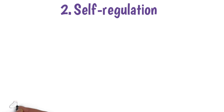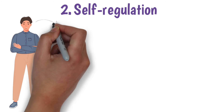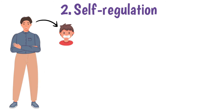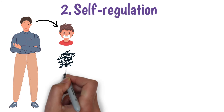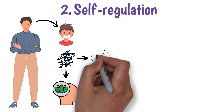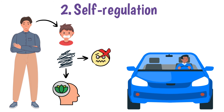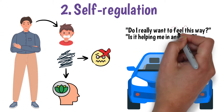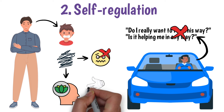Self-regulation: once we are aware of our thoughts and emotions, the next step is to regulate them. This means being able to control our impulses and reactions, instead of letting our emotions dictate our behavior. It also involves managing stress and handling difficult situations with composure. Realize that you have control over your own emotions. So next time when you are getting annoyed by a certain situation, for example when you are stuck in traffic, recognize these emotions and ask yourself: do I really want to feel this way? Is it helping me in any way? If not, you can choose to let these emotions fade away and change your reaction to the situation at hand.